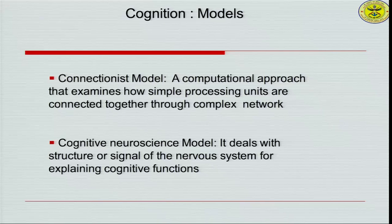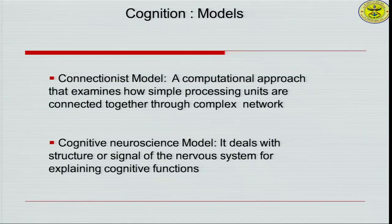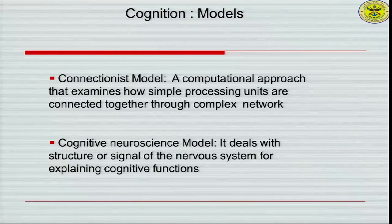We should try to understand the two major models to understand cognition. Cognition as a science has its origin in behavioral science, but both mathematical science and neuroscience have their own models. The mathematical science is based on a connectivistic model — a computational approach that examines how simple processing units are connected together towards a network of complex understanding. The mathematical processes try to understand the unitary concepts in cognition and how they are linked in a certain process, which if mathematically calibrated would be able to tell how such networks develop.